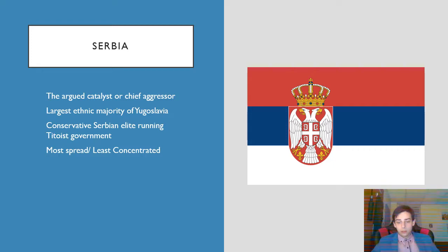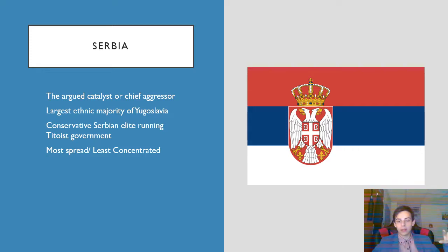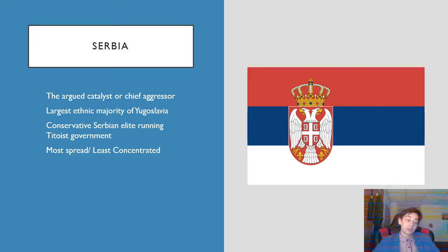They have the most to lose because under the Yugoslav government, even though Tito himself was not a Serb, his government was basically staffed by old Serbian elites. The same was true in the interwar period with the authoritarian regimes — Serbian conservative elites were governing. So the status quo favored the Serbs at the time of Tito's government.